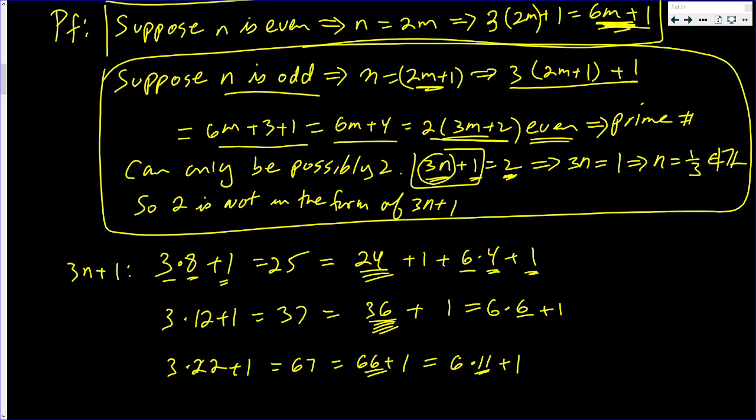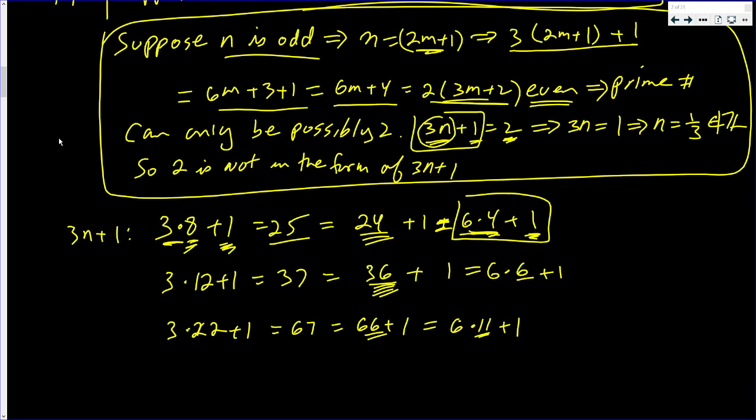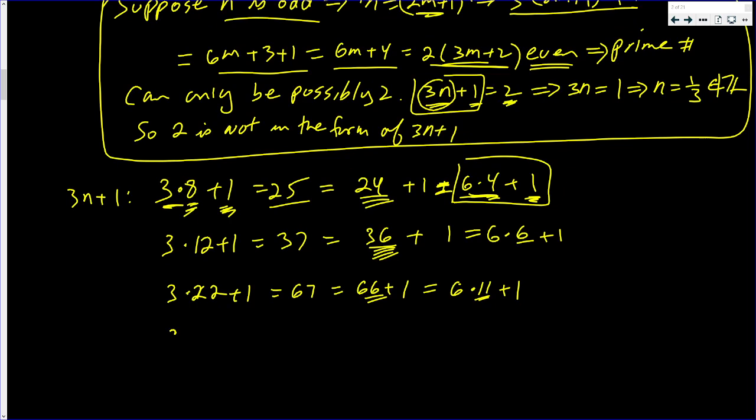Every prime number that is 3 times an even number plus 1 can be written as a multiple of 6 plus 1. It doesn't even have to be a prime number. 3 times 16 plus 1 is 48 plus 1. And 49 is not a prime number, but yet it's 48 plus 1, which is equal to 6 times 8 plus 1. So this even works if it's not a prime number.